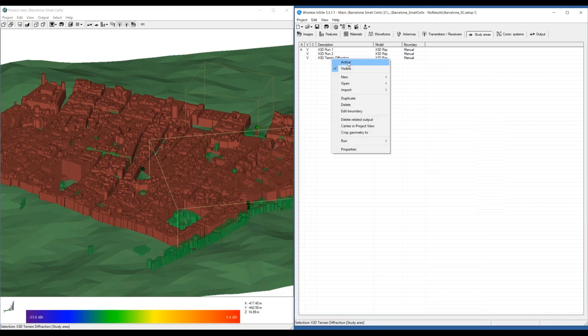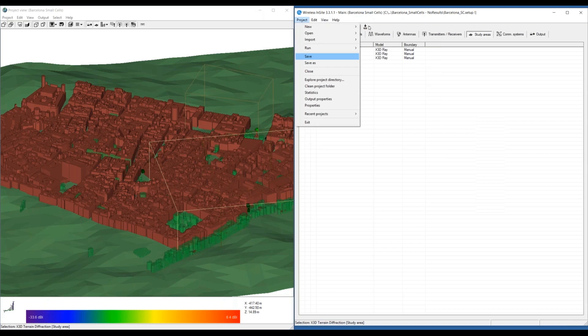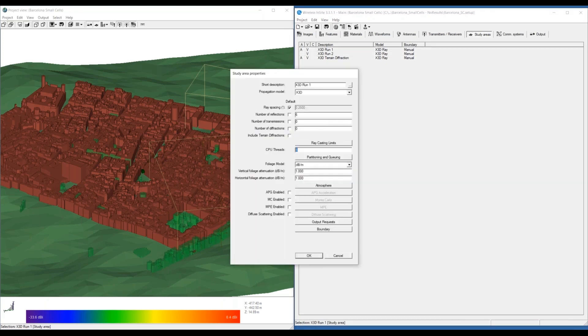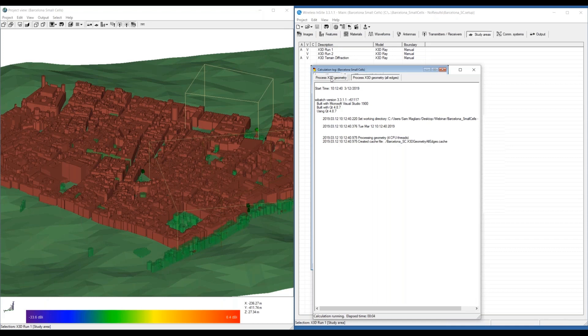Now, we can enable this terrain diffraction. This will build the second geometry cache, the one with terrain edges, at runtime. So we can go ahead and save the project. And now we can see these two separate tabs that are processing both versions of the geometry with and without the terrain edges included. When these geometry processing steps are done, the study areas themselves will kick off and read from their respective cache files.